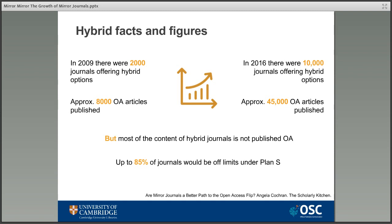Publishers have been accused of using hybrid journals as an excuse to get more money from institutions by essentially having them pay the same fee twice to access content, which is known as double dipping. Instead of declining as open access has become more popular, the number of hybrid journals is actually increasing. Unfortunately most of the content within these journals is not actually published openly. Current figures show that under Plan S mandates, 85% of journals currently published would be off limits to researchers looking to share their work. It's hoped that mirror journals will help reverse this trend.